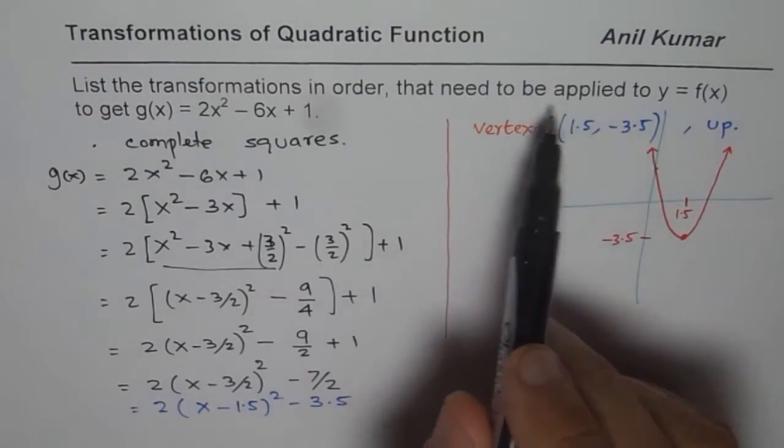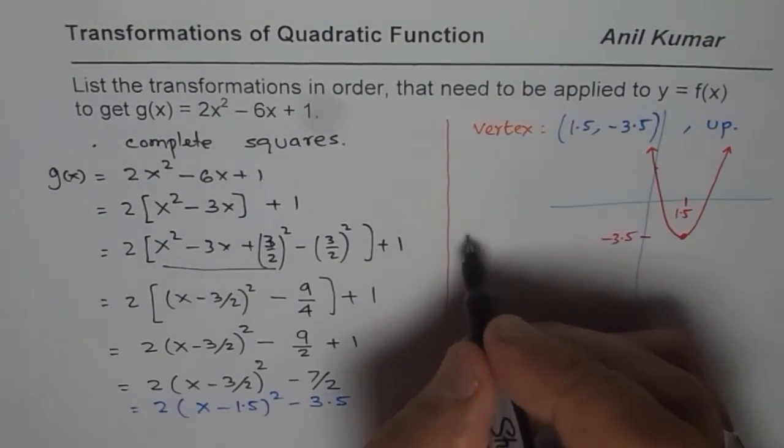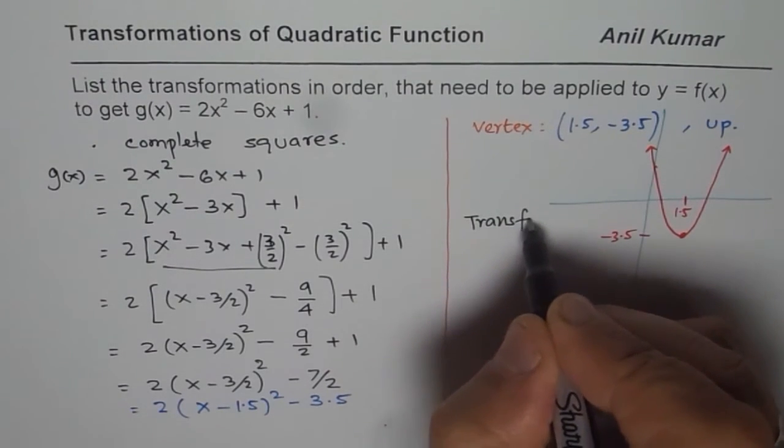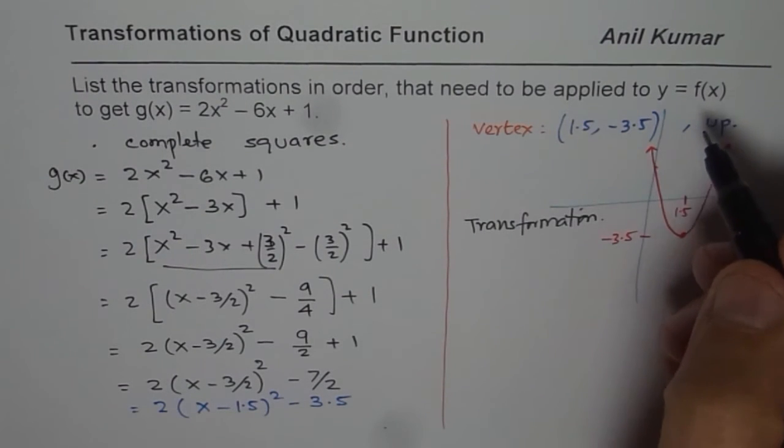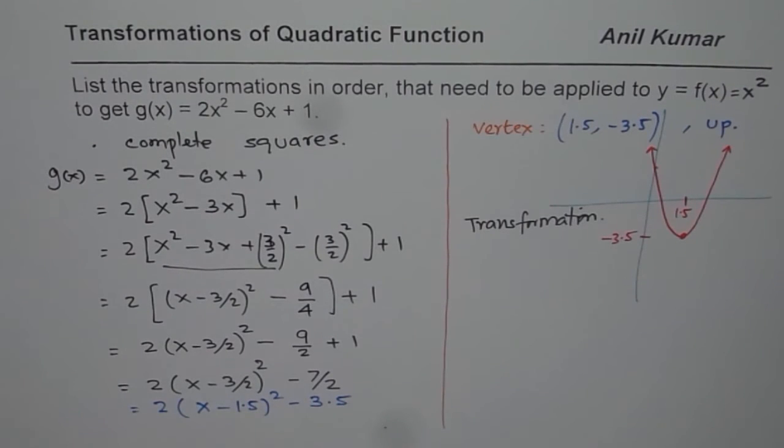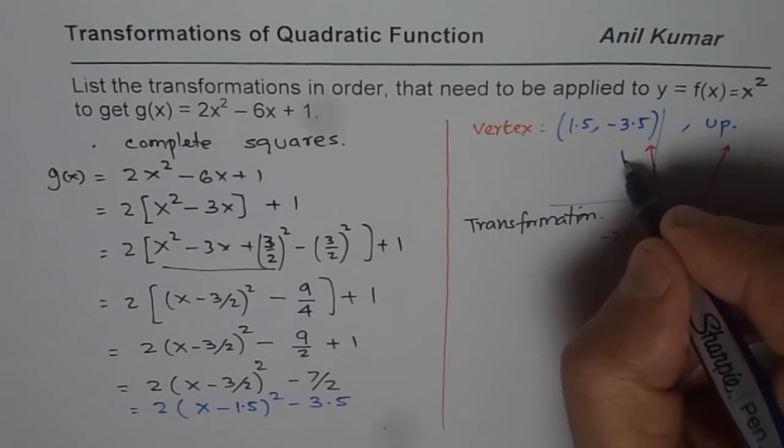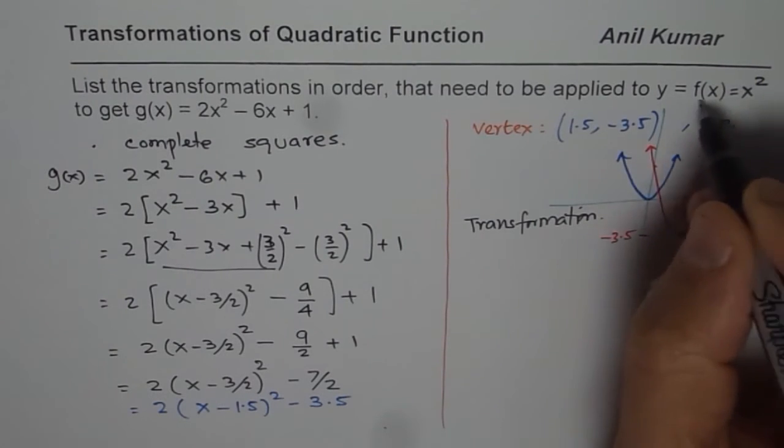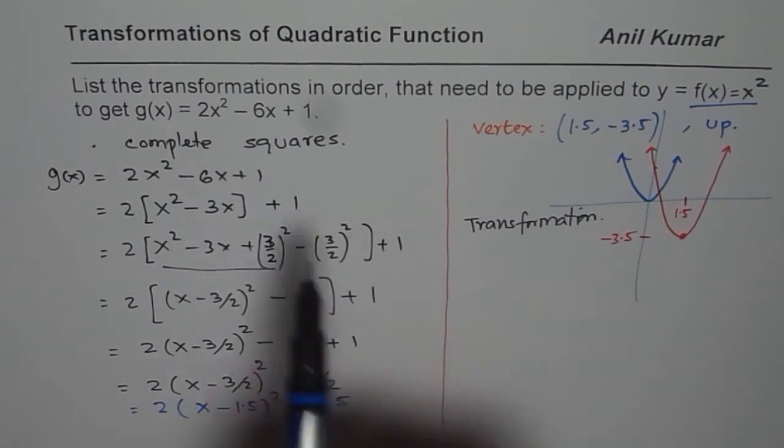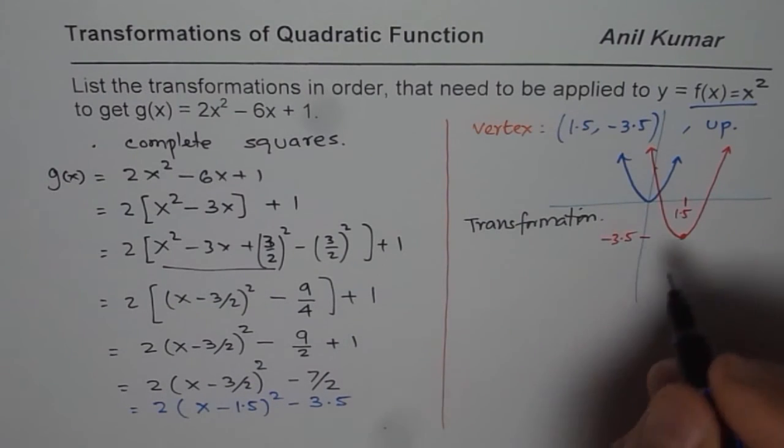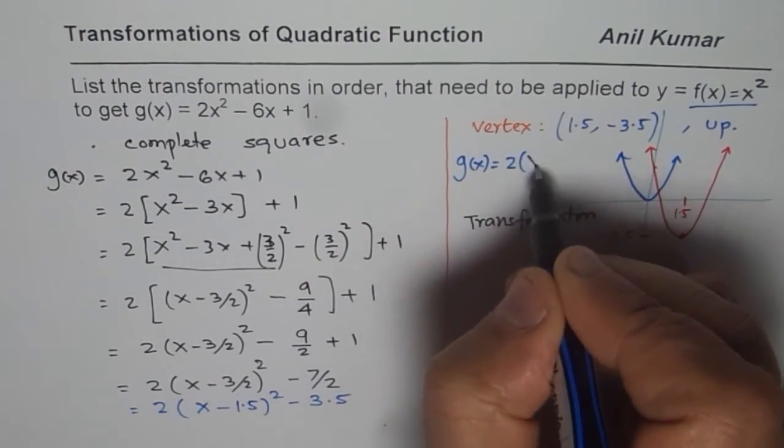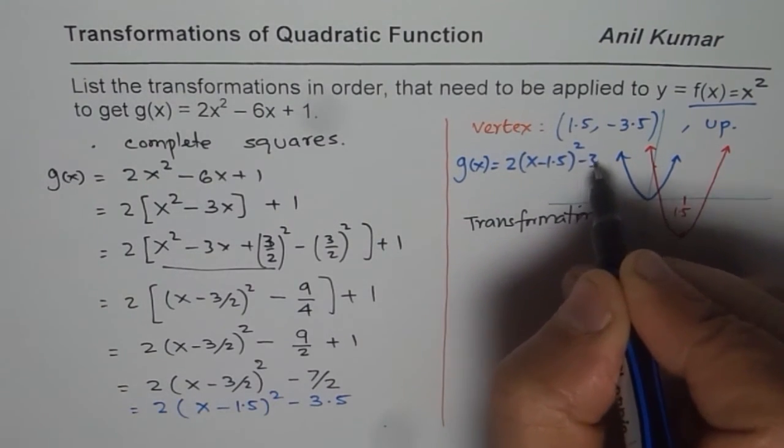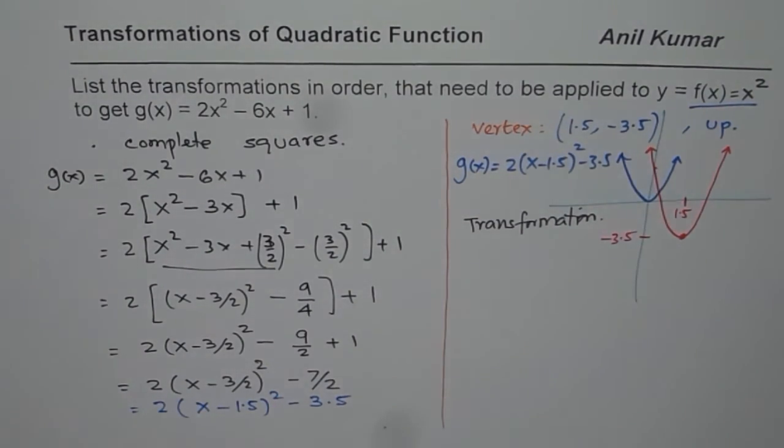We need to list transformations in order to transform this function to that form. So let us write down the transformations. As you can see, f of x from y equals f of x equals x squared is missing. So let me just add that part. x squared is a graph which is here. If you compare with y equals x squared, this particular function which we have written in the vertex form as g of x equals 2 times x minus 1.5 whole square minus 3.5. Now for this function, we will list down all the transformations.